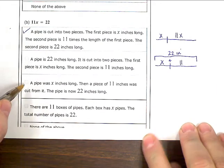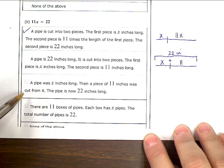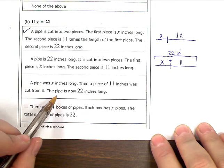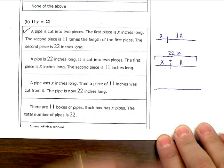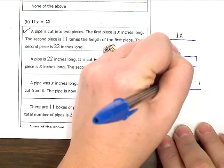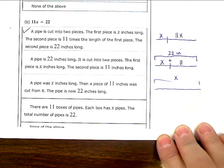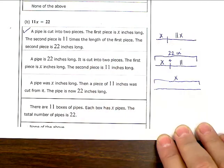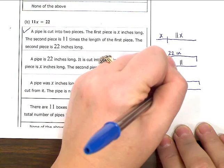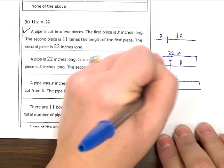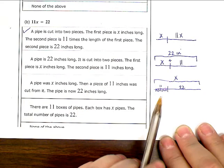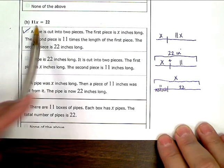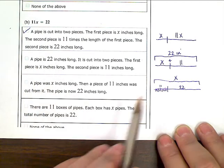A pipe was x inches long. Then a piece of 11 inches was cut off. The pipe is now 22 inches long. So basically here we have a pipe. To start out with, it was x inches, end-to-end. X inches long, and I cut off, let's cut it right there, and throw away those 11 inches, and I'm left with 22. This is a subtraction situation, not multiplication, so we're not going to mark that one, because we were losing a piece of the pipe.